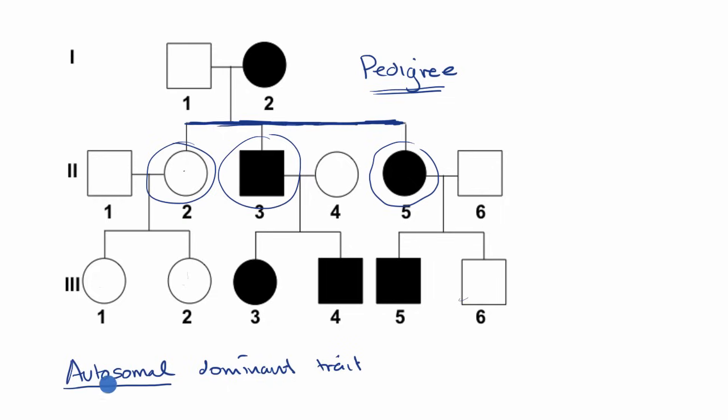Autosomal means that it is a trait associated with one of the non-sex chromosomes. We have 23 pairs of chromosomes as humans. One of those pairs determines our sex. The other ones don't determine our sex. So this means that freckles is associated with one of the 22 pairs of chromosomes that do not determine your sex.